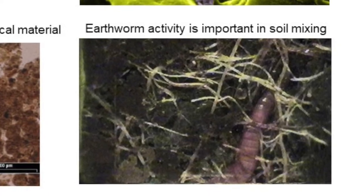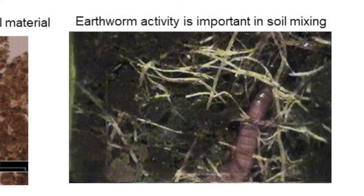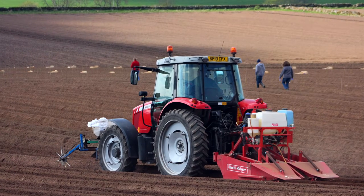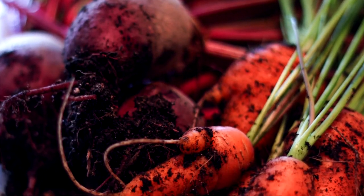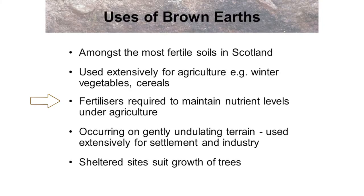Earthworms are incredibly important in soil mixing and as a result they often get called the ecosystem engineers. Given the deep nature of brown earth soils and their free drainage and often high levels of natural fertility, brown soils are often cultivated. They are used extensively for agriculture such as winter vegetables, although fertilizers are required to maintain sufficiently high nutrient levels if regularly cultivated. As they often occur on gently undulating terrain they are often used for settlement and industry, and sheltered sites suit the growth of deciduous trees.